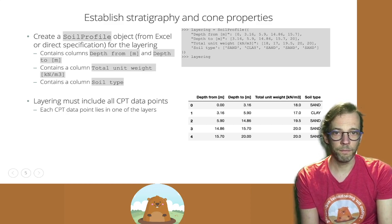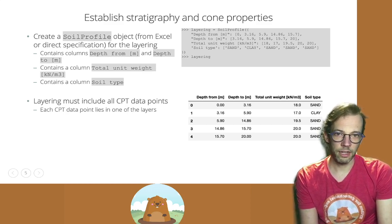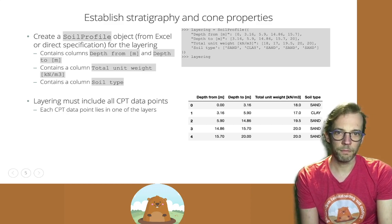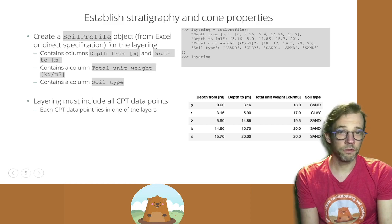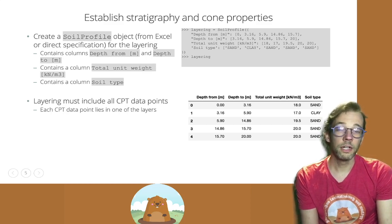We need to specify that layering to allow Groundhog to continue its further processing. The layering is given as Groundhog's soil profiles. So if you remember what soil profiles are, they need to have a column with the top depth and bottom depth of each layer.